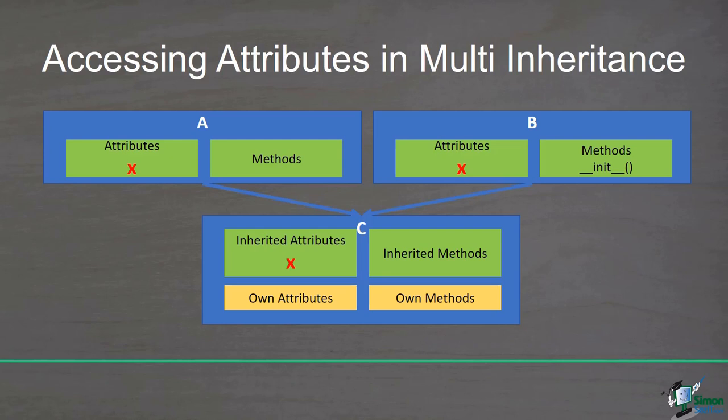In the last video, you saw how Python calls methods for a class inherited from multiple classes. In this video, I want to talk about the same process but about accessing attributes. For example, suppose we have three classes A, B, and C, and C inherits from A and B. The X attribute is defined in both A and B, so it is inherited by C as well. But the question is: what is the value of X for the C object? I will show you how attributes are accessed in multi-inheritance.